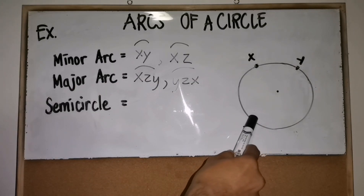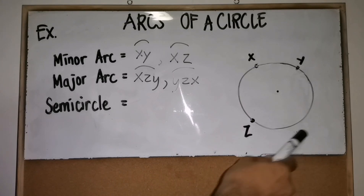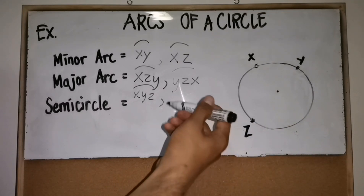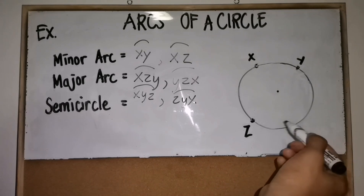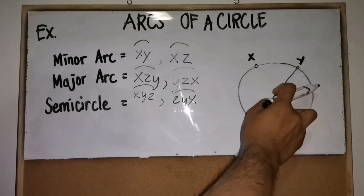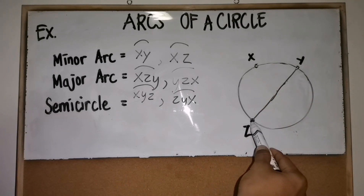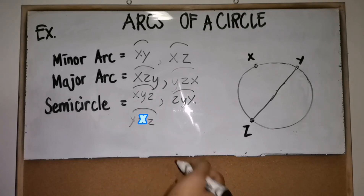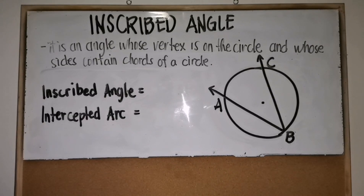We can also name another major arc — the arc opposite to arc XZ — which can be named arc XYZ or arc ZYX. For the semicircle, since it measures 180 degrees, we can have arc YXZ, or it can simply be named arc YZ.